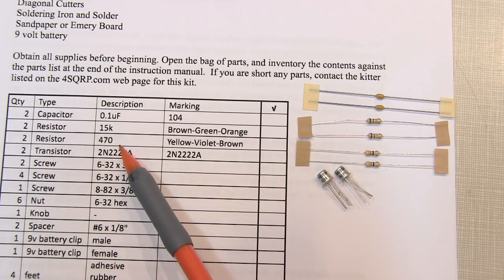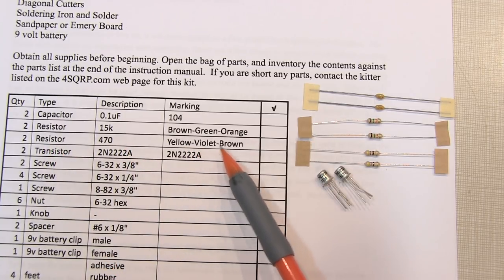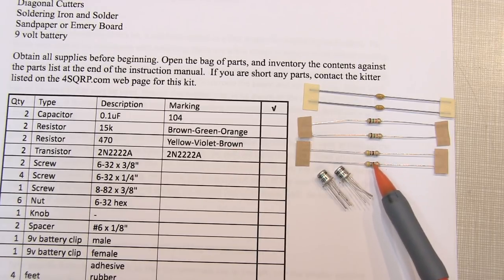The next are two 470 ohm resistors and they'll have a marking with yellow, violet, brown, and gold band like these two right here.